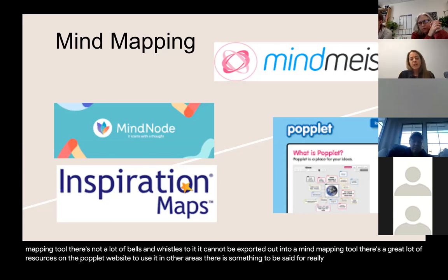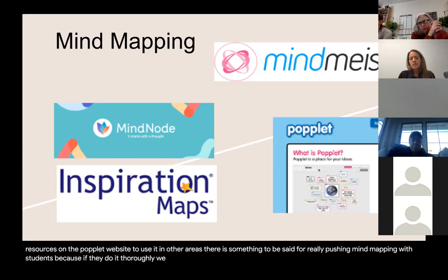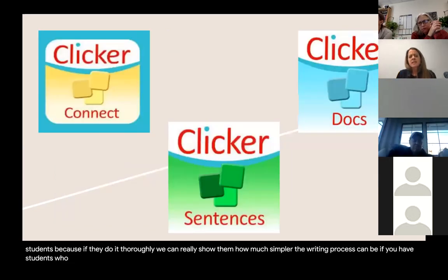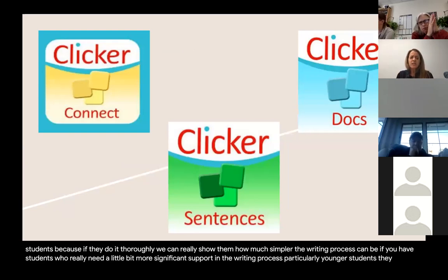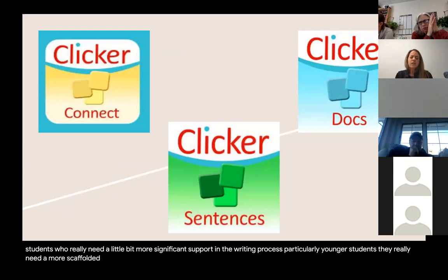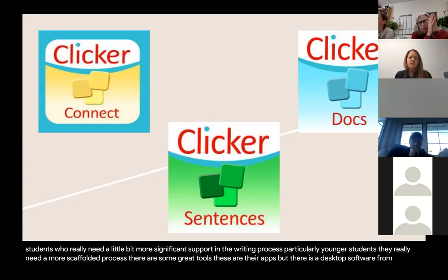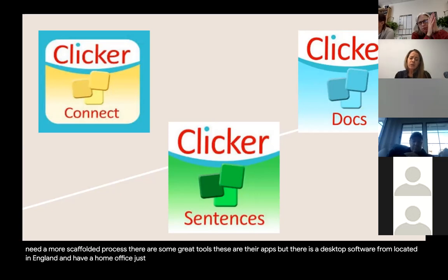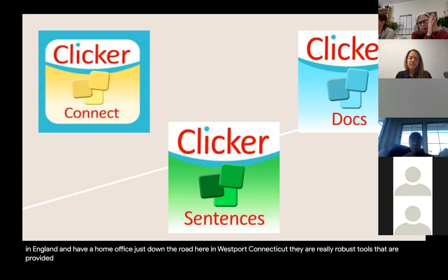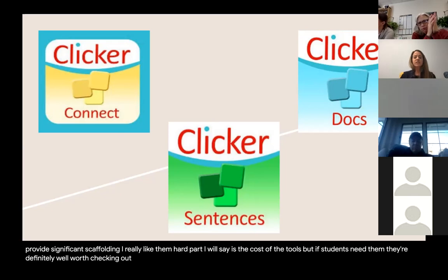There is something to be said for really pushing mind mapping with students, because if they do it thoroughly, you can show them how much simpler the writing process can be. For students who need more significant scaffolding, particularly younger students, there are some great tools from Clicker — they have both apps and desktop software. They are located in England with a home office in Westport, Connecticut. They're really robust tools that provide significant scaffolding. The cost can be a challenge, but if students need them they're definitely worth checking out.